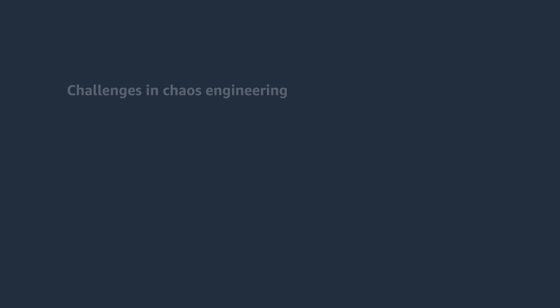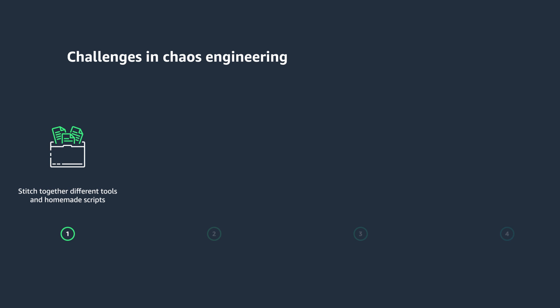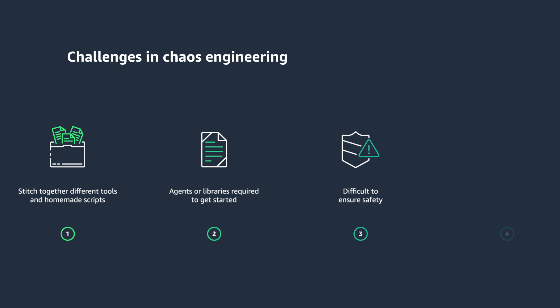While chaos engineering is a great option to have in your toolbox, it's often hard to get started with. Hard because most of the time you have to stitch different tools, scripts, and libraries together to cover the full spectrum of faults you can inject in a system. Compatibility of required libraries and agents for these open source tools may be limited. It is also difficult to ensure a safe environment in which to inject faults. You want to be able to limit the extent of potential issues from an experiment, and without guardrails, an experiment can go sideways affecting the rest of your environment. And finally, some failures are really hard to reproduce. It is important to realize that outages rarely happen because of a single failure — it usually happens because of a combination of small failures all happening at the same time or in sequence.